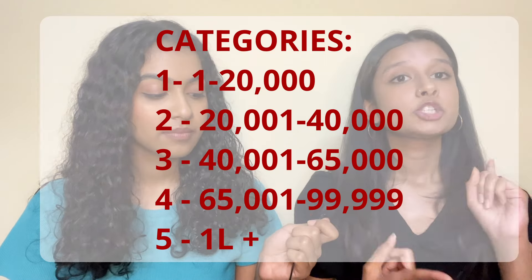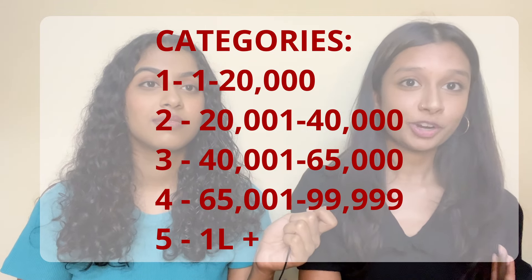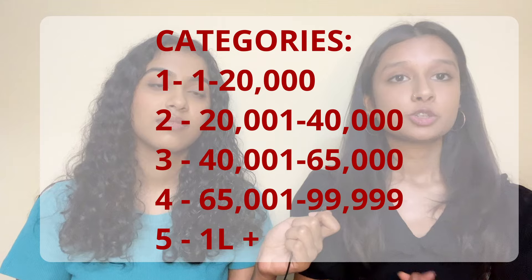The ranking also depends on the number of candidates, exam difficulty, and how many people show up for admission. There are five rank categories: 1 to 20,000 is Category 1; 20,000 to 40,000 is Category 2; 40,000 to 65,000 is Category 3; 65,000 to 99,900 is Category 4; and 1 lakh onwards is Category 5. Depending on your rank, you'll fall into a category and be called for counselling in that order — Category 1 first, Category 2 second, and so on.